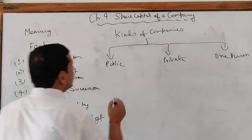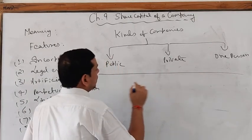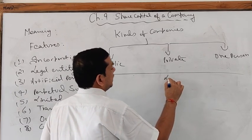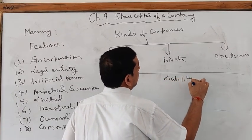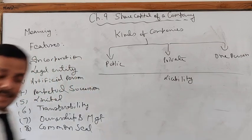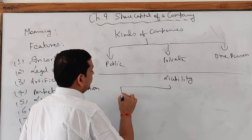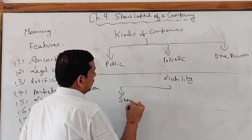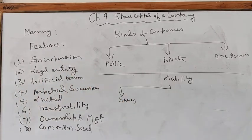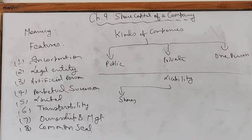Some other types of companies are classified on the basis of liability. These include company limited by shares, unlimited liability company, and company limited by guarantee. These are the major types of companies classified by liability.